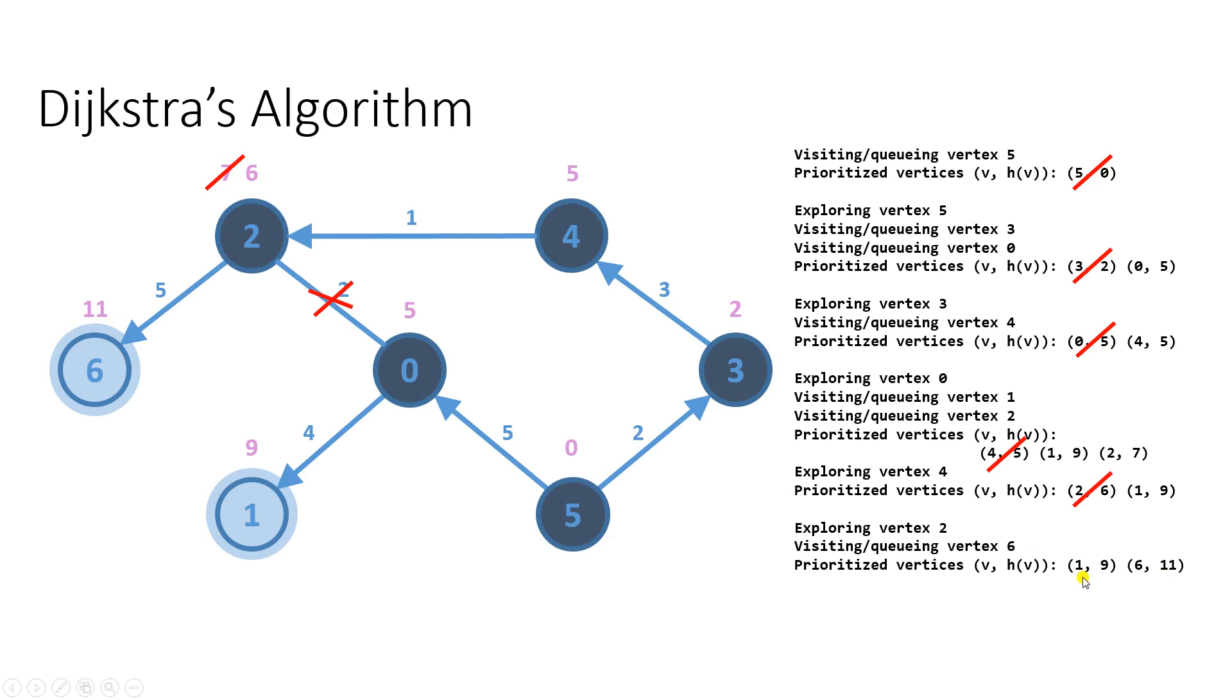Now that we have only vertices 1 and 6, once again we choose the one with the highest priority, or the lowest cost, that's vertex number 1. We explore vertex number 1, it didn't visit any further vertices, and it just got removed from the priority queue. Now we have only vertex 6 left to explore.